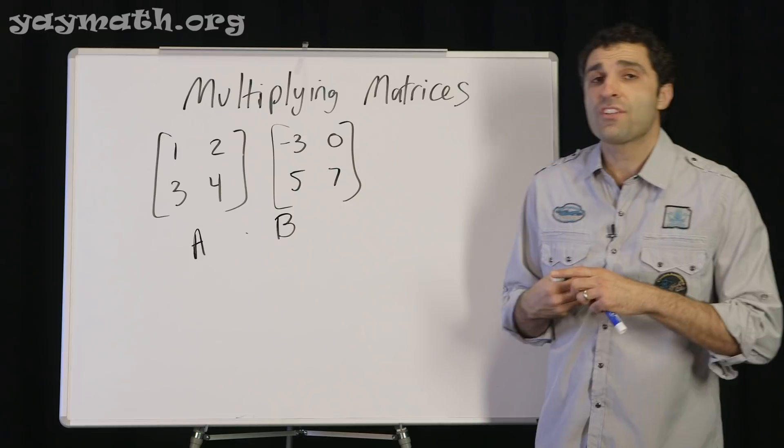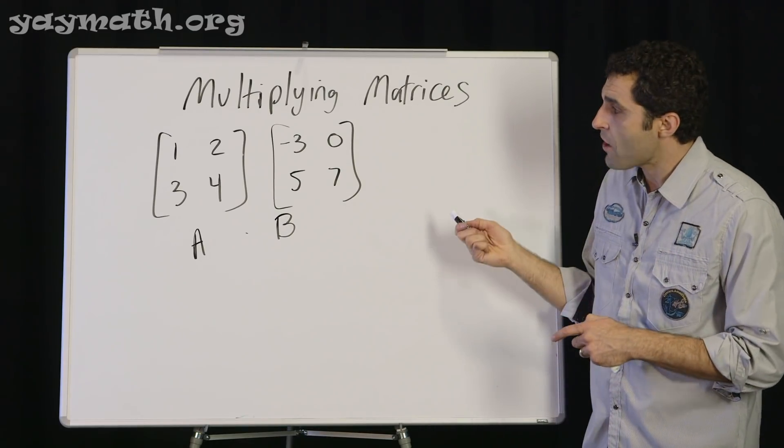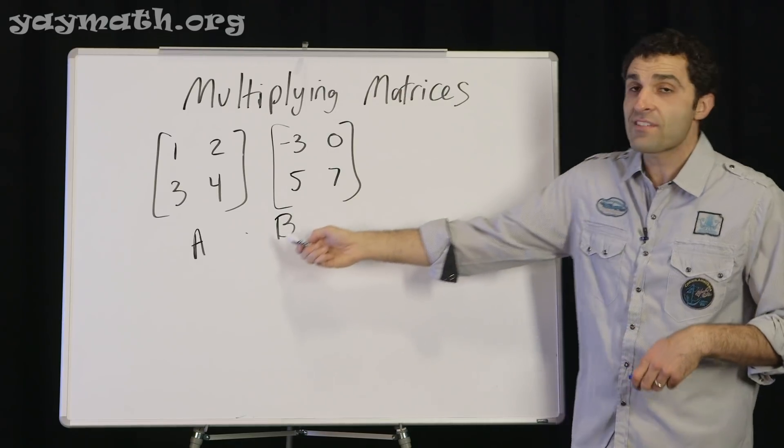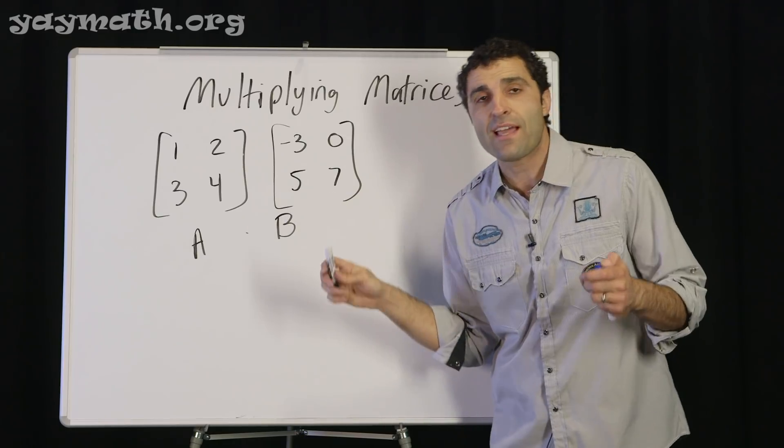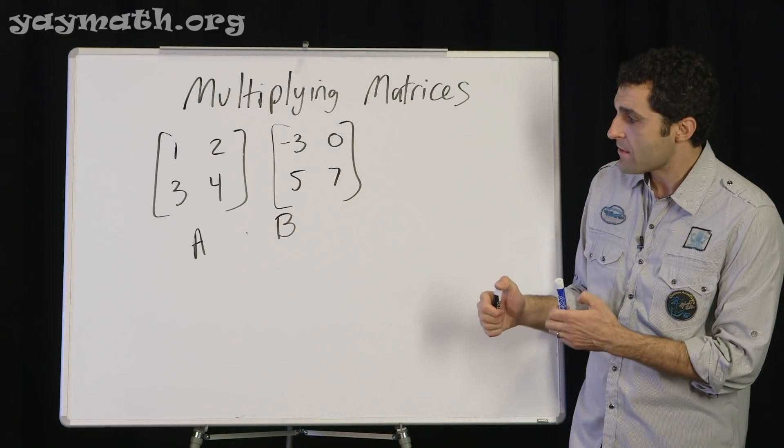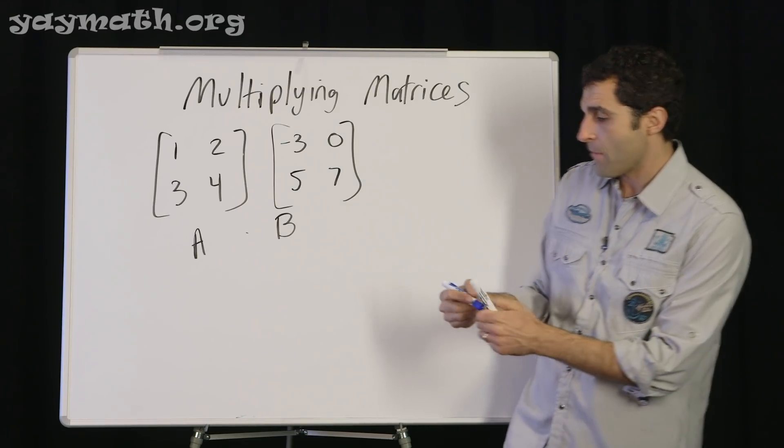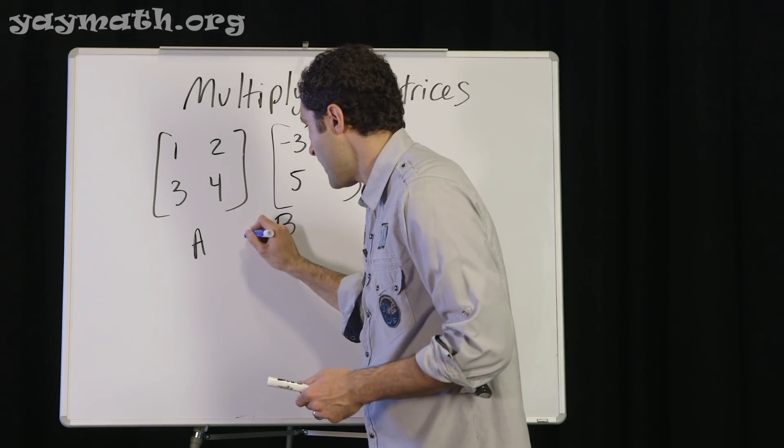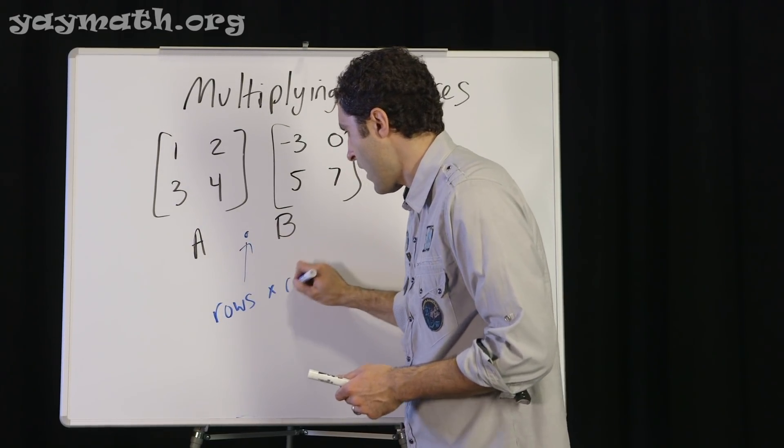The temptation is to treat this the same way you would do addition. When I first saw something like this, I was like, wouldn't you multiply 1 times negative 3, 2 times 0 and do all that? No, it's not the case. What we really need to do is learn how to multiply rows by columns.